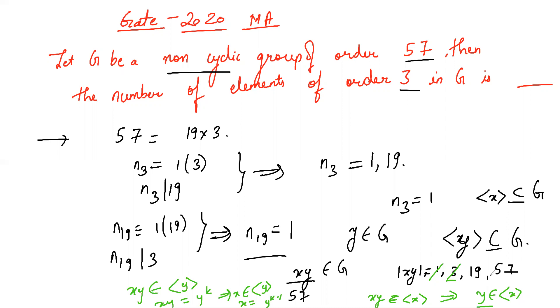Hence xy does not have order 19, and it would imply xy has order 57. But we have been given that our group is non-cyclic. Thus our initial assumption that n3 were 1 is false, so n3 has to be 19.